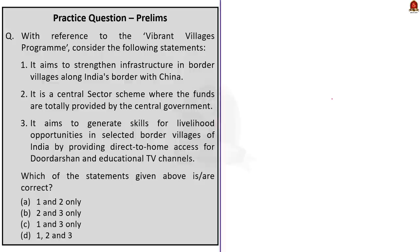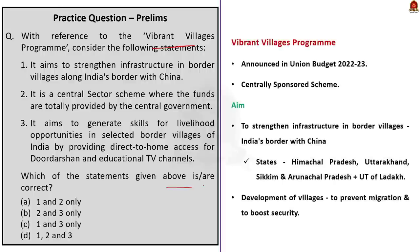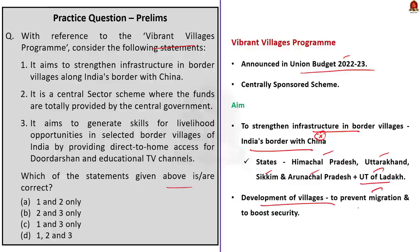The next question is about the Vibrant Villages Program. The Vibrant Villages Program was announced in the Union Budget 2022-23. This program aims to strengthen infrastructure in border villages located along India's border with China — specifically the border villages of Himachal Pradesh, Uttarakhand, Sikkim, Arunachal Pradesh, and the Union Territory of Ladakh. The program aims to transform these border villages to prevent migration, which in turn boosts security along India's border areas with China. Vibrant Villages Program is a centrally sponsored scheme, meaning funds are shared between the center and the states.